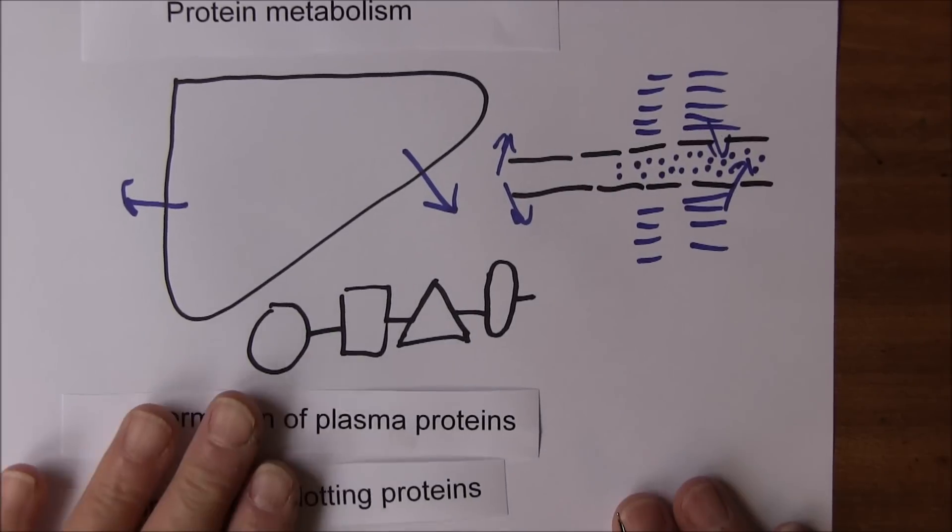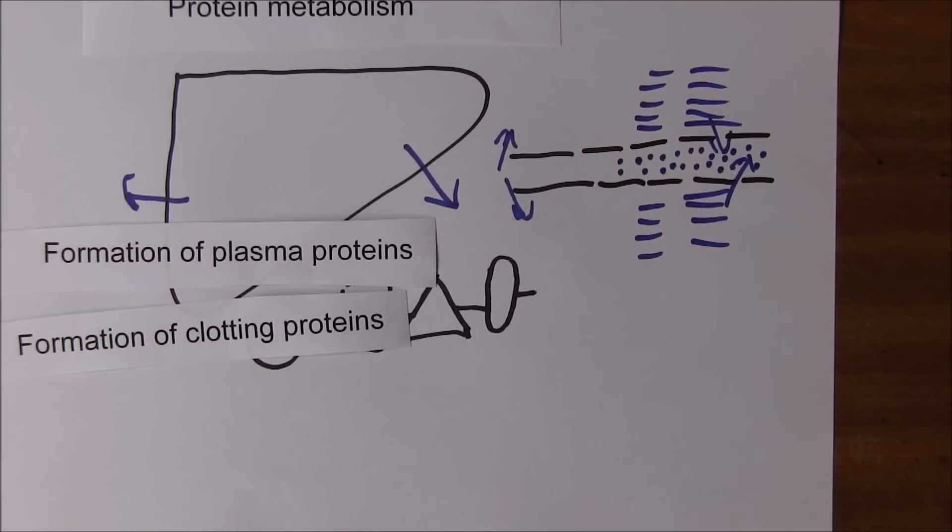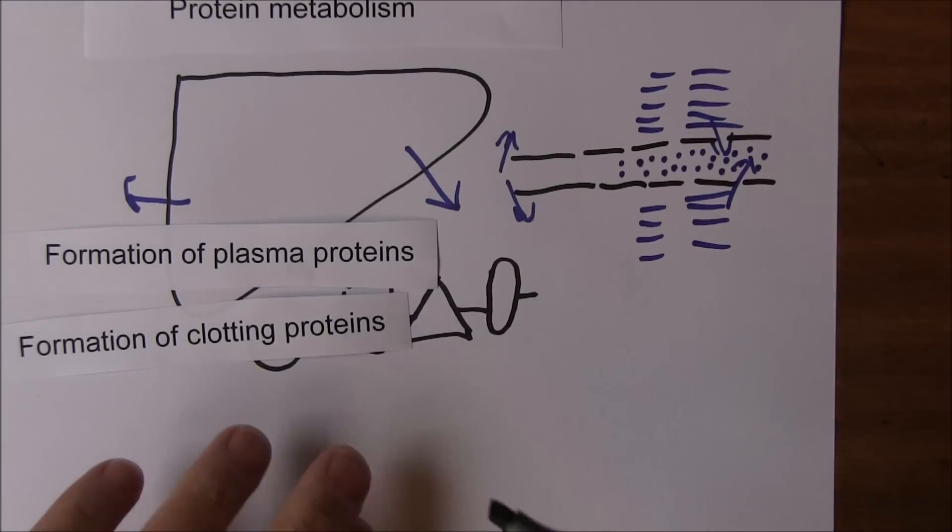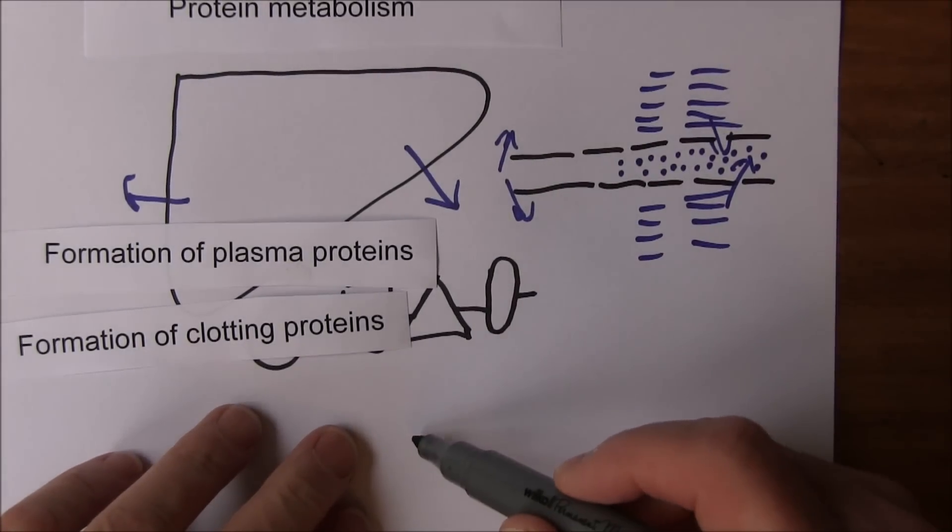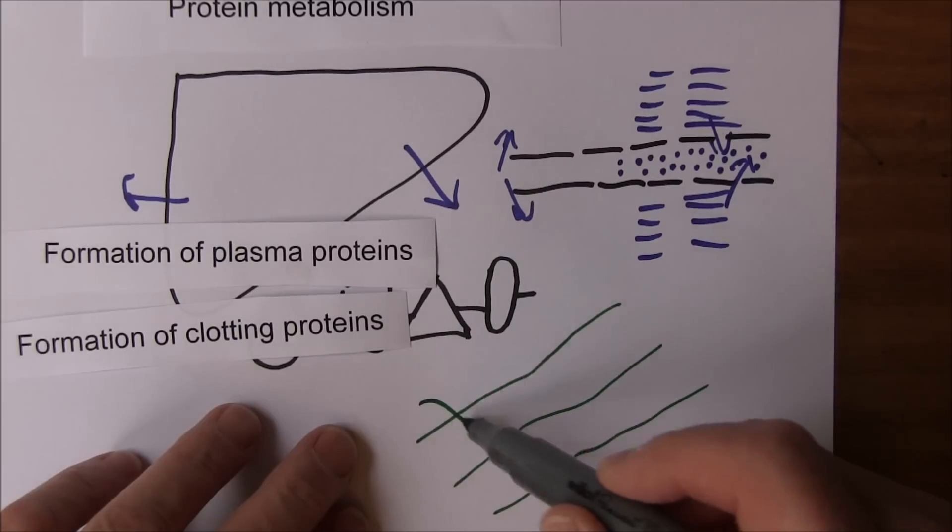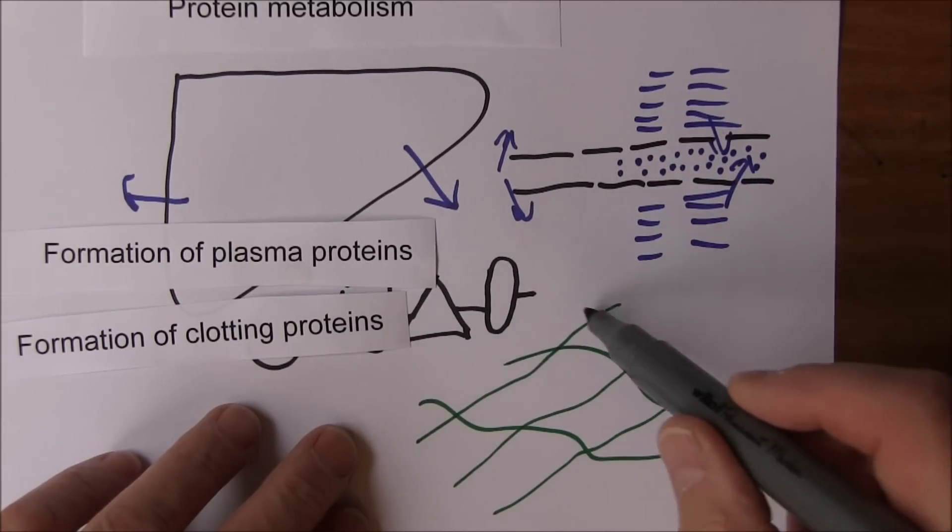The liver cells produce several of the clotting protein factors such as prothrombin and fibrinogen. Fibrinogen is present in the blood but then when there's the right trigger the fibrinogen precipitates into long sticky strands of fibrin that stick to each other.